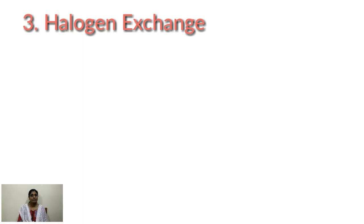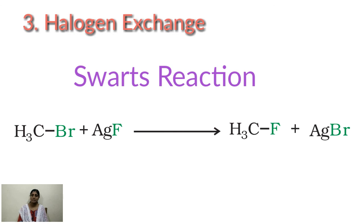Alkyl fluorides are prepared by heating alkyl chloride or alkyl bromide in presence of a metallic fluoride like AgF, CoF2, or SbF3. This reaction is known as Swartz reaction. CH3Br plus AgF gives CH3F plus AgBr. So these are the methods of preparation of haloalkanes.